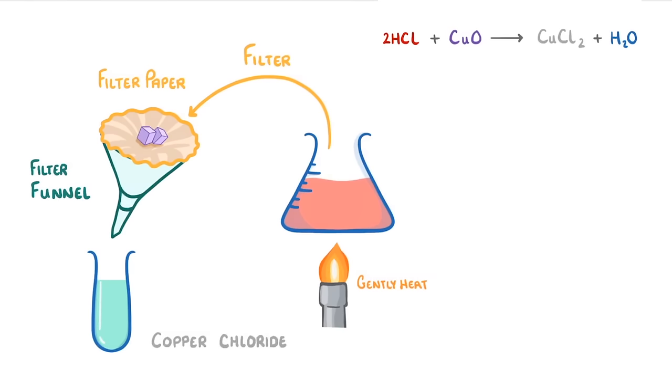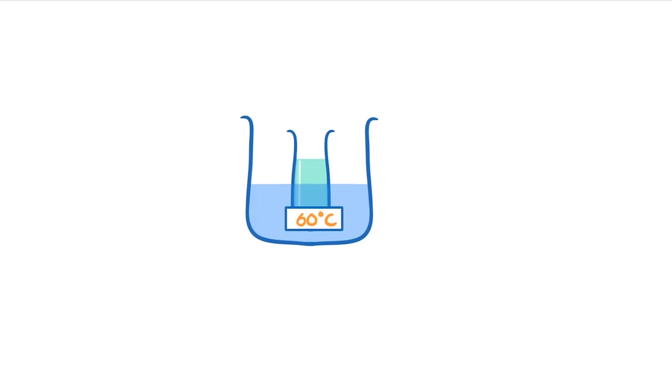In order to get pure solid crystals of copper chloride though, we'd need to gently heat up our now filtered solution and evaporate off some of the water. To do this, we'd want to use a water bath or an electric heater, rather than a Bunsen burner, because we don't want to heat up the solution too much and risk damaging our salt.